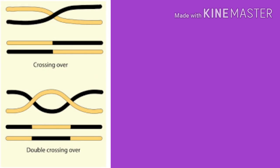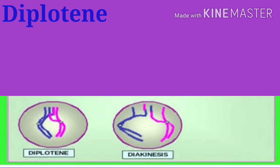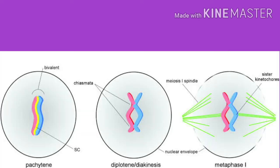As a result of crossing over, cross-like structures called chiasmata form in the bivalent. In diplotene stage, homologous chromosomes start repulsing each other, so chiasmata become visible. Due to repulsion, chiasmata begin to move along the length of the chromosome and towards the ends of the chromosome.